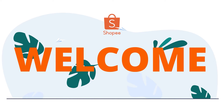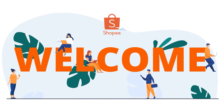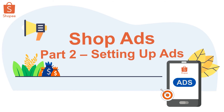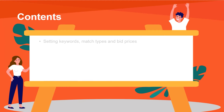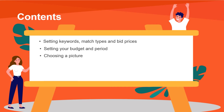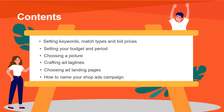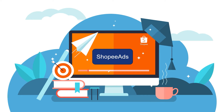Hello and welcome back to Shopee Ads Video On Demand. In this video, we will guide you through setting up your first shop ad. If you're not already familiar with shop ads, please refer to one of our previous videos. We will guide you through setting up keywords, match types and bid prices, setting your budget and period, choosing a picture, crafting ad taglines, choosing ad landing pages, and how to name your shop ads campaign. Without further ado, let's get started.